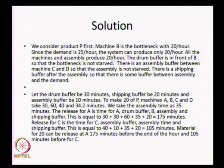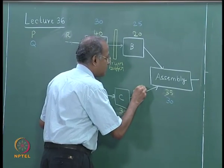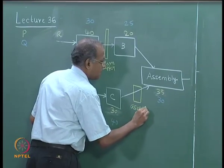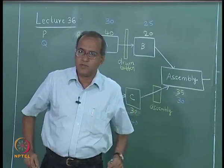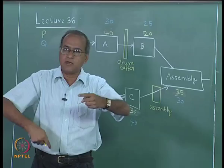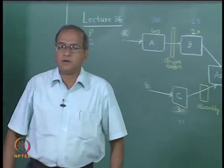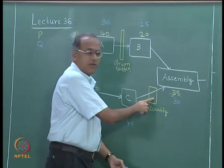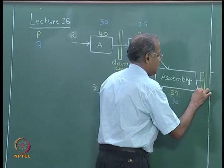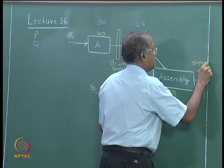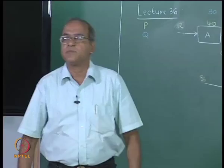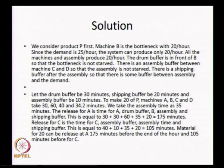There is an assembly buffer between machine C and the assembly, and there is a shipping buffer after the assembly. So there are three types of buffers: the drum buffer in front of bottleneck B, the assembly buffer, and the shipping buffer after assembly before it reaches the customer. Let the drum buffer be 30 minutes, the assembly buffer be 10 minutes, and the shipping buffer be 20 minutes.